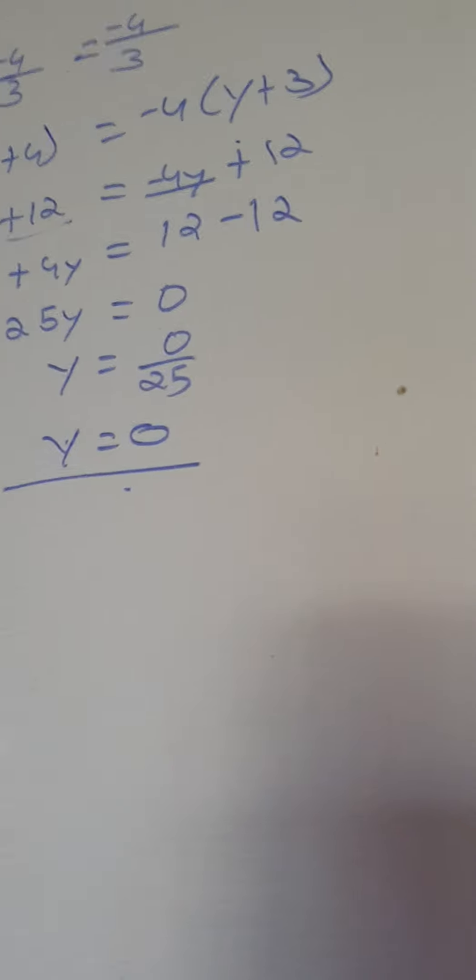Now let us do our word problem which is question number 6. Our first word problem is: the ages of Harry and Harry are in the ratio of 5 to 7. After 4 years, the ratio of their ages will be 3 is to 4. Find the present age.